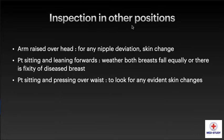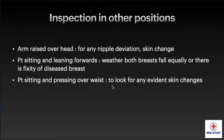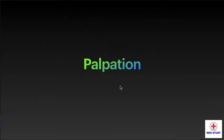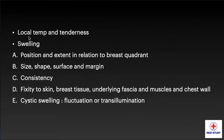We have to look at the areola for color, size, and surface. Inspect in other positions also — including arms raised over the head for any nipple deviation or skin change, patient sitting and leaning forwards to check whether both breasts fall equally or there is fixity of diseased breast, and patient sitting and pressing over the chest to look for any evident skin changes.